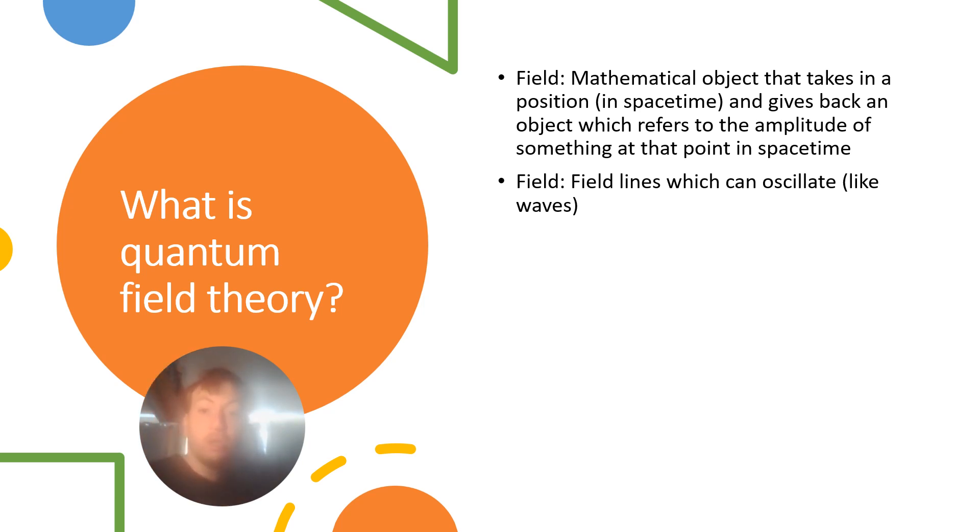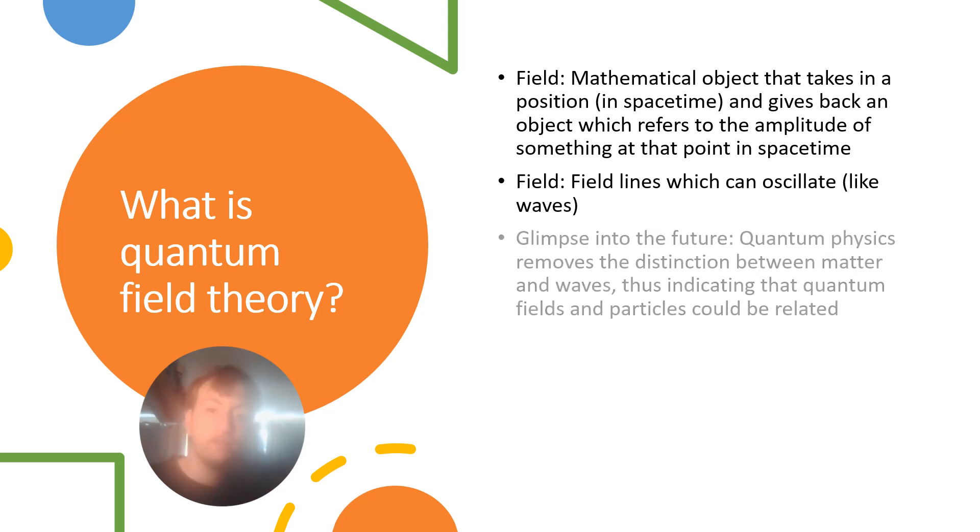And the field lines are allowed to oscillate. If we look at classical electrodynamics, the electric field oscillates, so field lines can oscillate quite like waves. And this gives a glimpse into the future.